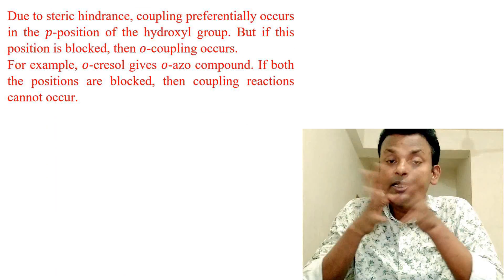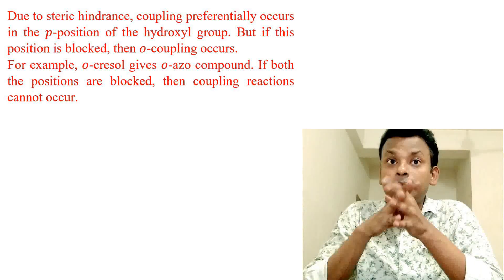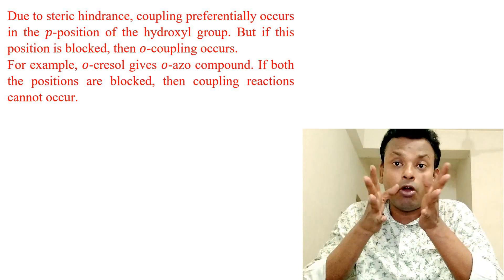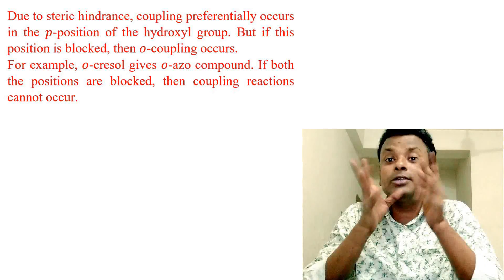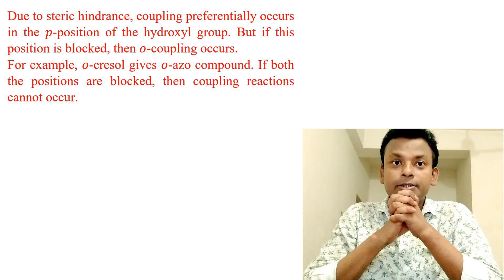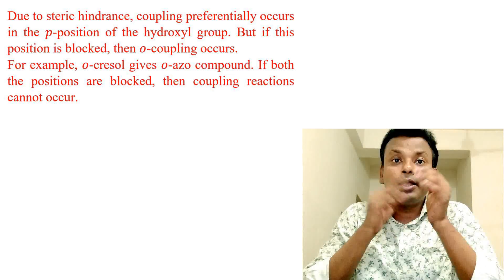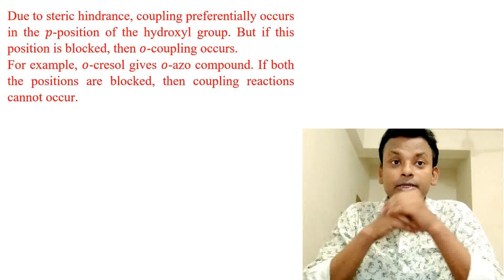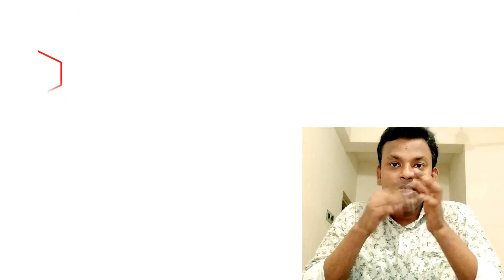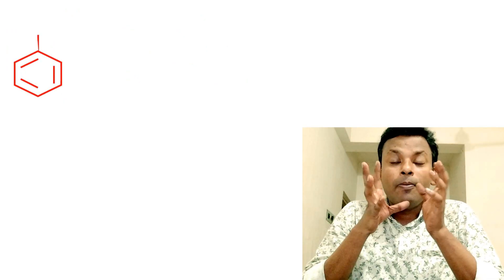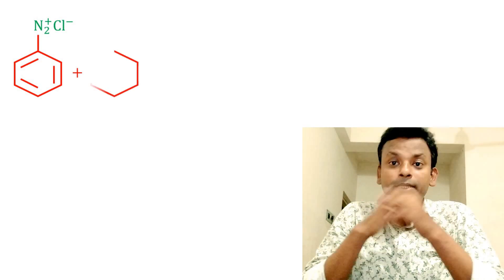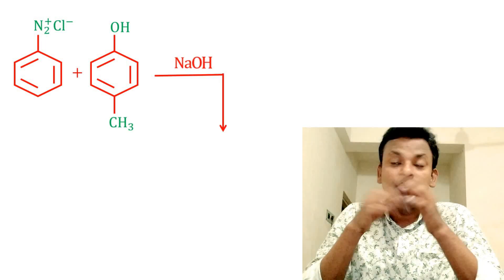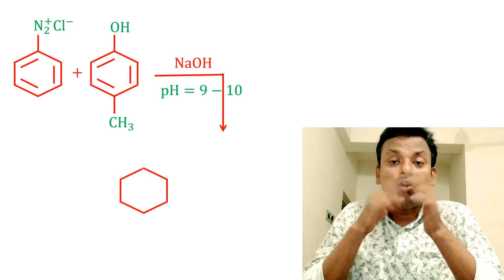Due to steric hindrance, the coupling reaction preferentially occurs at the para position of the hydroxyl group. If this position is blocked, then ortho coupling occurs instead. For example, ortho-cresol gives an ortho azo compound. If both positions are blocked, the coupling reaction cannot occur. Benzene diazonium chloride reacting with para-cresol in presence of NaOH at pH 9 to 10 gives an ortho azo compound.